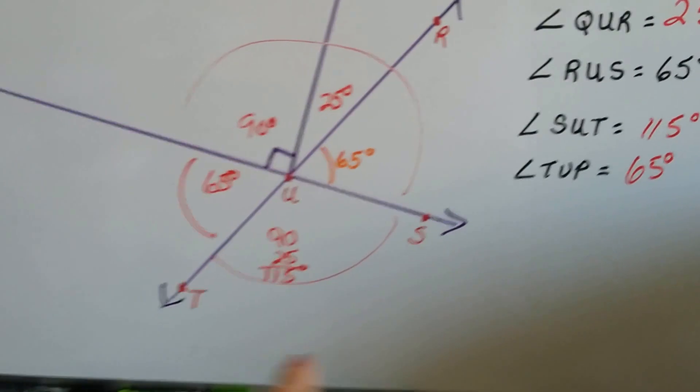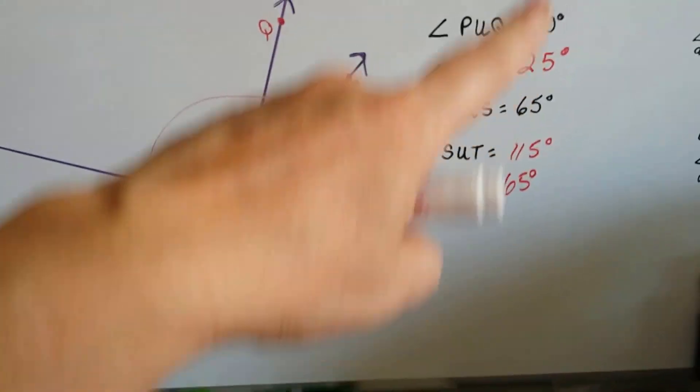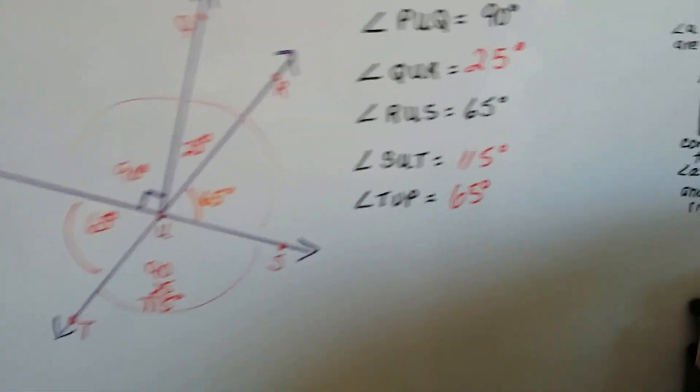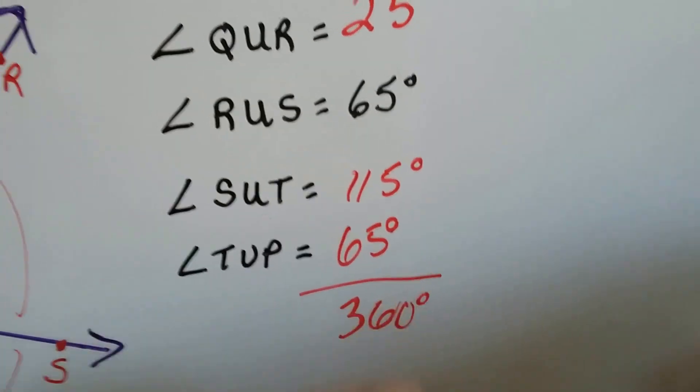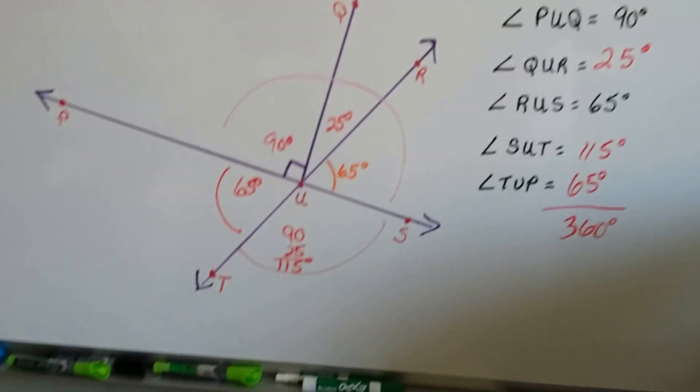Now we've made our complete circle. If we total all of these up, it would equal 360 degrees like a circle. And we've got all our measures.